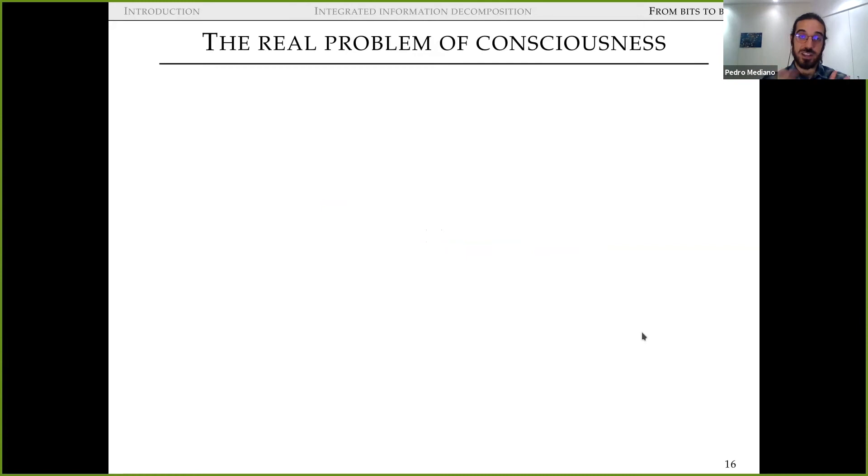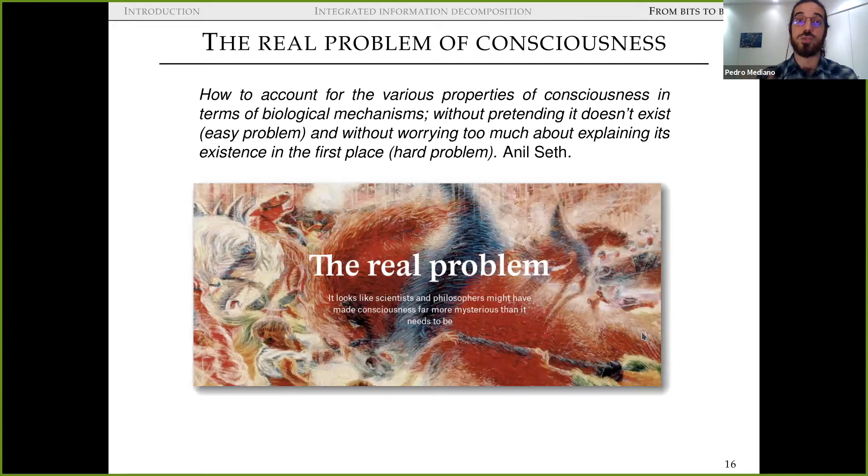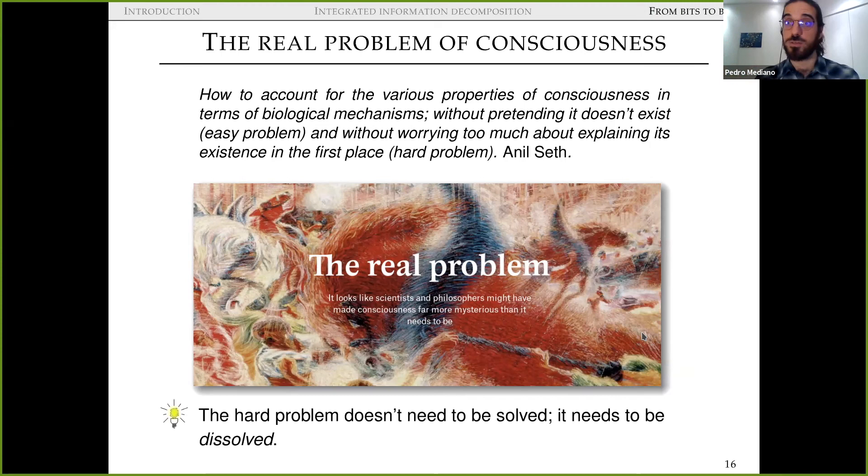More broadly, this is, I would just like to give a quick heads up here to this thing that Anil Seth dubbed the real problem of consciousness. So the real problem of consciousness in the words of Anil Seth is how to account for the various properties of consciousness in terms of biological mechanisms without pretending it doesn't exist and without worrying too much about explaining its existence in the first place. So basically, we just chip away at the problem of consciousness by explaining more and more of these dimensions. And slowly the hard problem of consciousness won't be solved, it will just be dissolved. We'll just explain away different aspects of information and consciousness and physiology. And eventually, that will give us a satisfying account of consciousness.